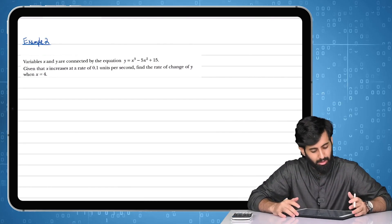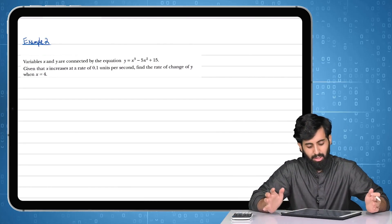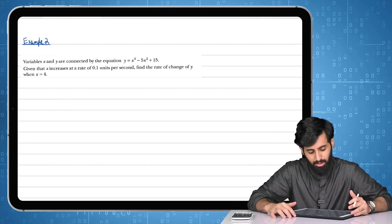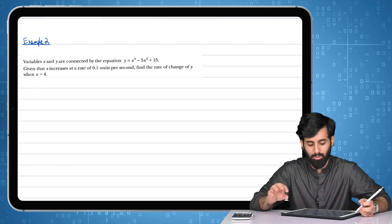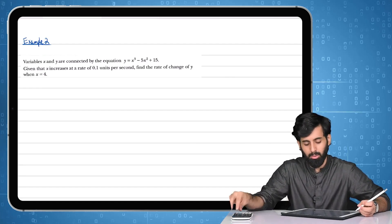We'll do this example and get that sorted. It says variables x and y are connected by the equation y equals x³ - 5x² + 15. Given that x increases at a rate of 0.1 units per second, so we have the change in x with respect to time. Let's write that down. This basically means dx/dt which is equal to 0.1 units per second.